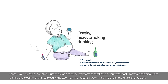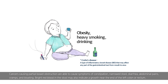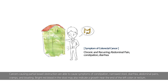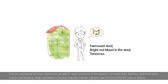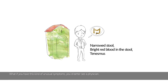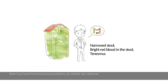Cancers causing partial bowel obstruction can cause symptoms of constipation, narrowing of stool, diarrhea, abdominal pains, cramps, and bloating. Bright red blood in the stool may also indicate a growth near the end of the left colon or rectum. If you have these kinds of unusual symptoms, you'd better see a physician.